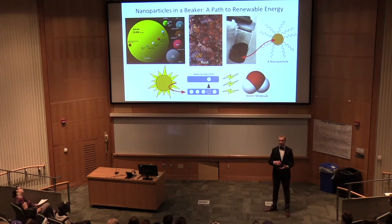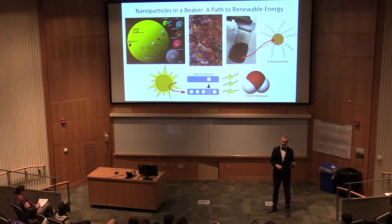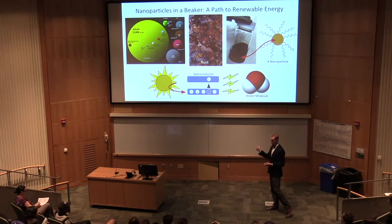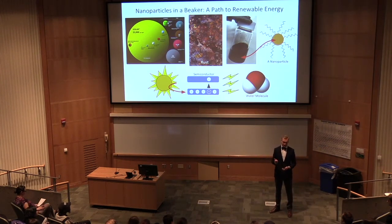For example, think of a beach ball. It has a low surface area to volume ratio, whereas a marble has a high surface area to volume ratio because the volume is so small. So we need to make nanoparticles, and we need to make them in the right ratio of iron to oxygen.